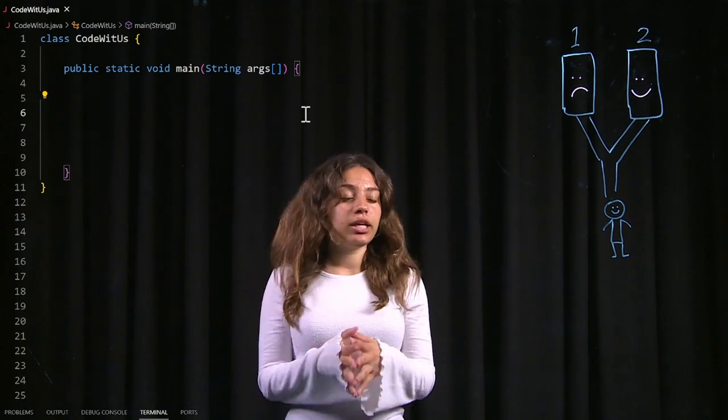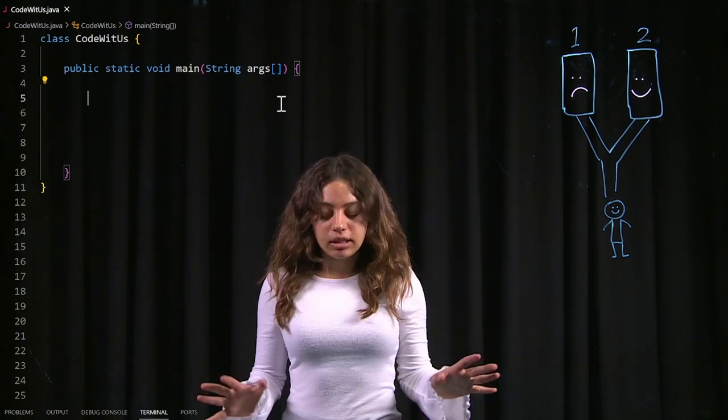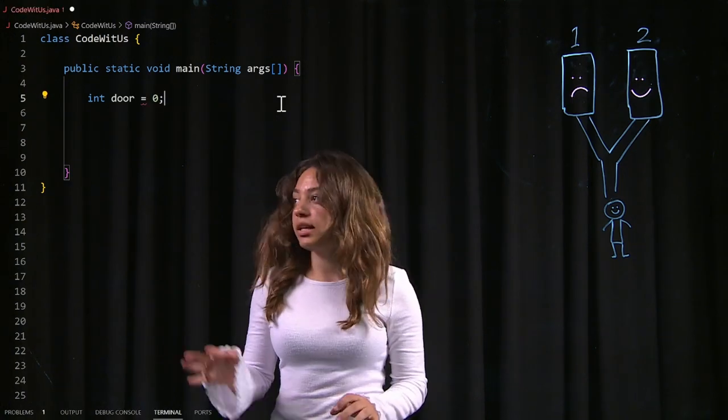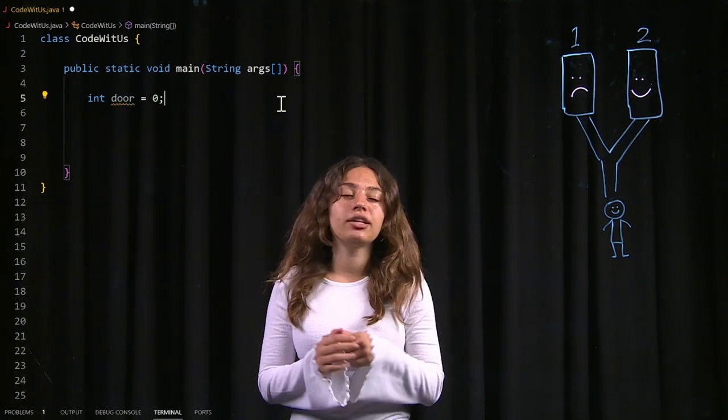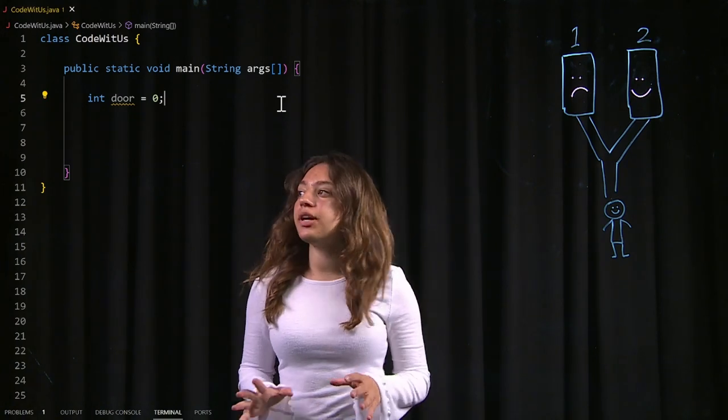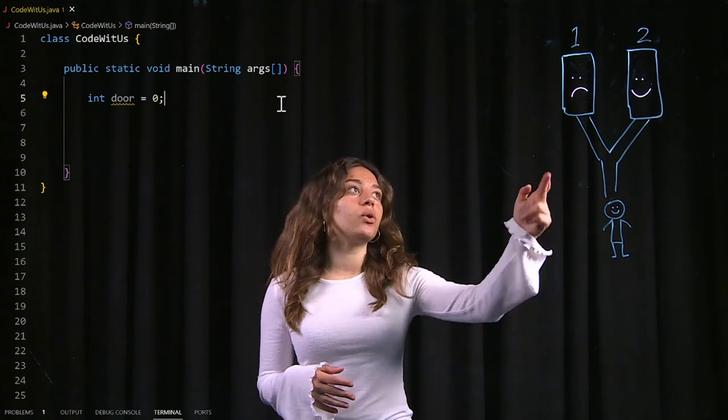Now let's code that out in Java. So first, let's set a variable and call it door, and set it equal to zero for now because there is no door zero, so it's a safe door. And this variable represents the door that we pick. So we can either pick door one or two.